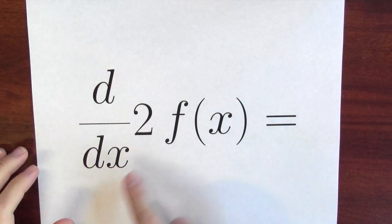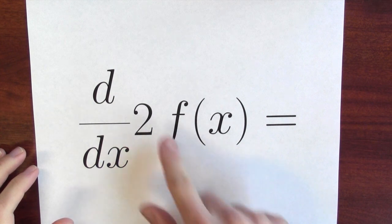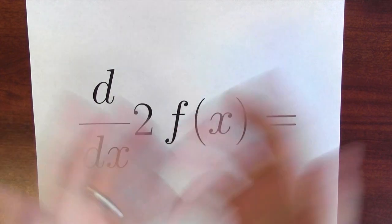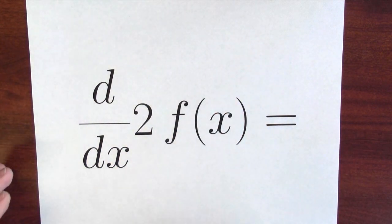Here's the question that I want to address right now. What's the derivative of some constant multiple of some function? Now, in this case, the constant multiple is 2, but of course, that 2 could be replaced by any fixed number.